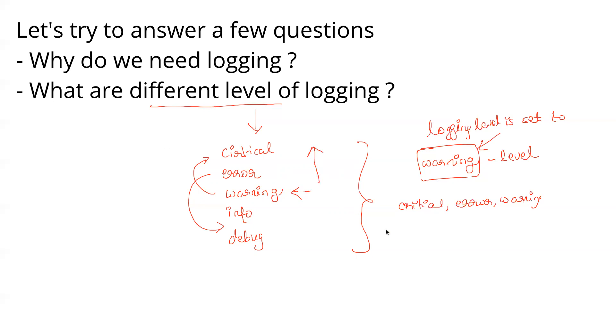Let us take another example. Let's say if you select logging level to be info, what all messages will be captured? Critical will be captured, then error will be captured, then warning will be captured, and info will be captured. Why? Because the logging level is set to info. This is why the hierarchy of logging or different levels of logging is very important. Hope it made sense.